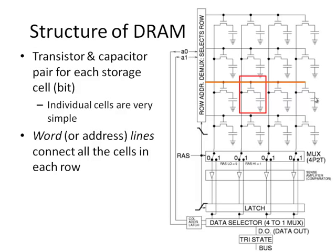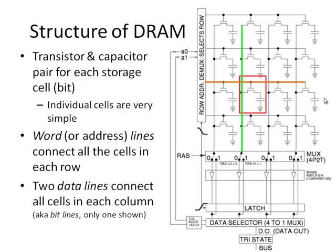The address line connects all cells in each row. There are also two data lines connecting all the cells in each column. By setting a value to activate a particular address line and a particular column, you can address an individual memory cell — an individual bit of memory. Each of these cells stores a single zero or one value.